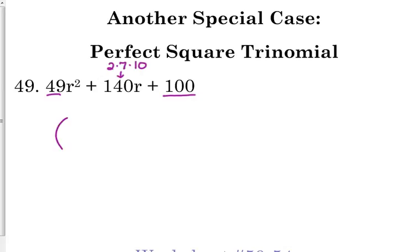So these factor, these are also easy to factor if you recognize that they are perfect square trinomials. Just like with the difference of perfect squares, we're going to have 7r and 7r, and we're going to have 10 and 10.